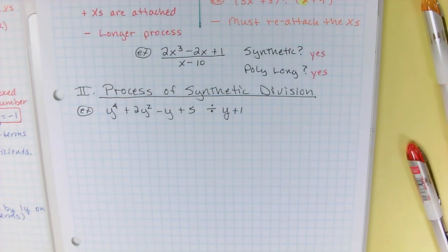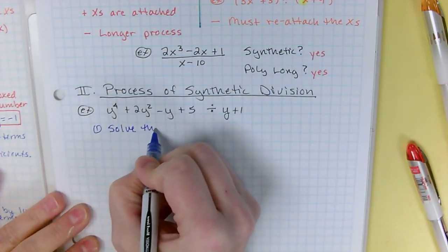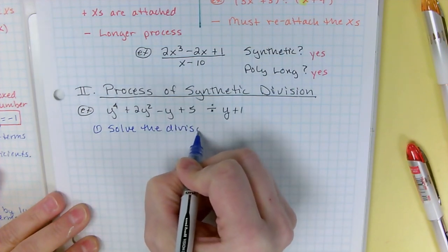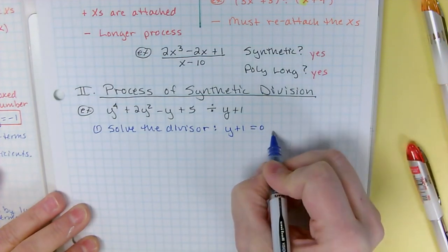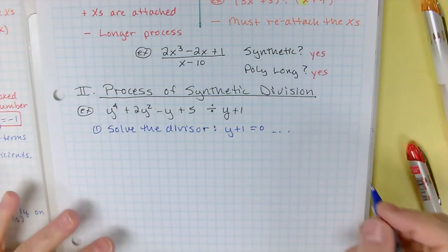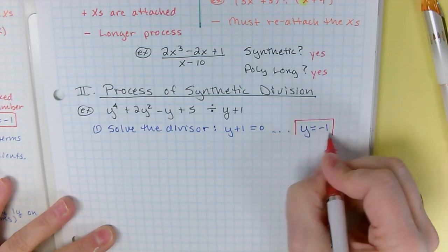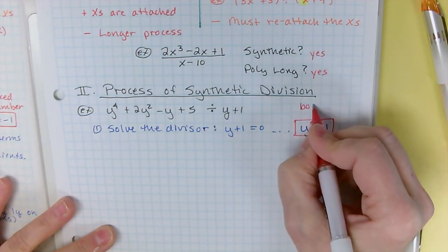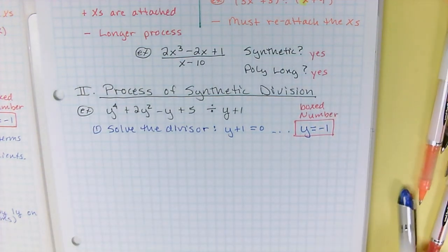Okay, so when you do synthetic, you have to solve the divisor. So that's your first step is solve the divisor. So you're going to take y + 1, set it equal to zero and solve it. So if you solve y + 1 = 0, you end up with y = -1. This is your boxed number, which will make more sense in a second. This is your boxed number, is y = -1.